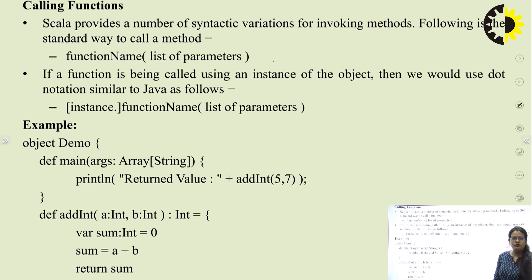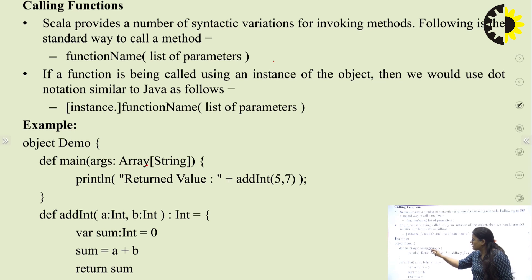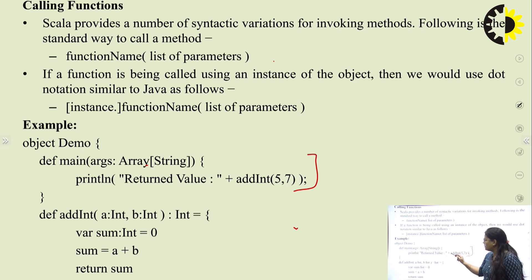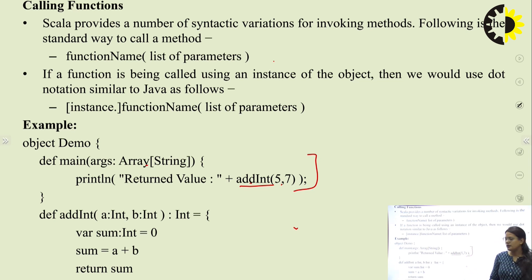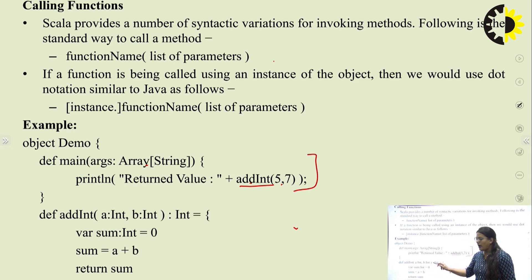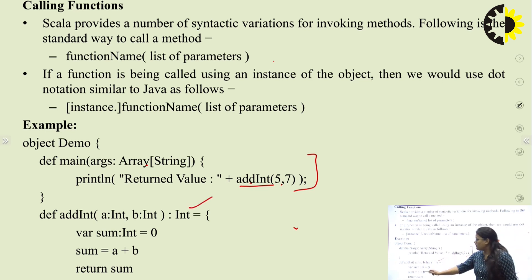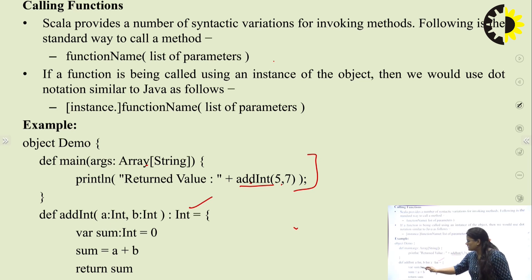Here is an example of a function. In object Demo, the main method calls println with the return value of addInt(5, 7). The user-defined function addInt takes two integer parameters a and b, and the return type is also Int. Inside the function, we declare a mutable variable: var sum: Int = 0, then sum = a + b, and return sum.